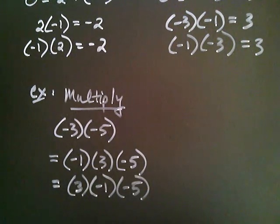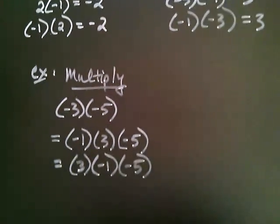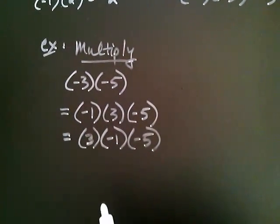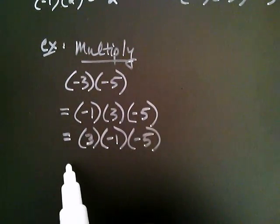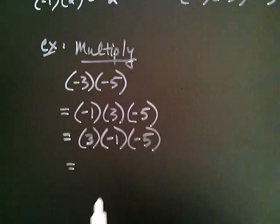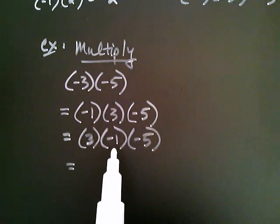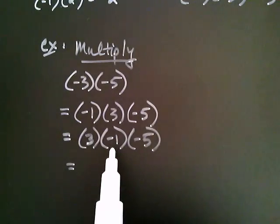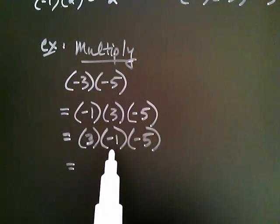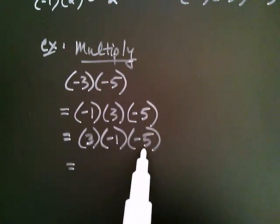Now what does that get us? When I look at this, I say to myself: negative one times anything causes the number to change sign. So negative one times negative five is positive five.